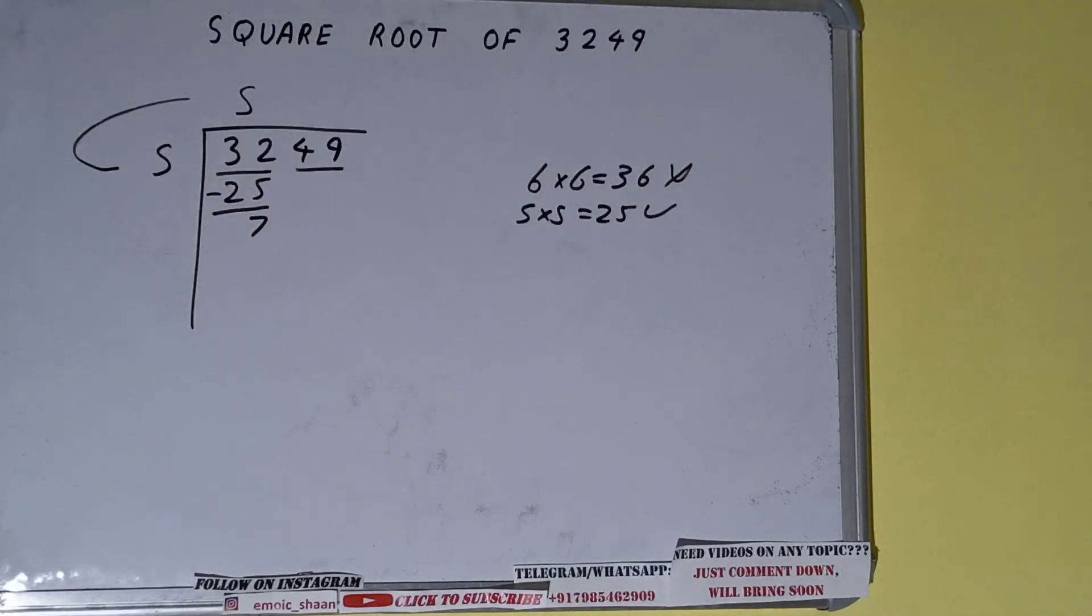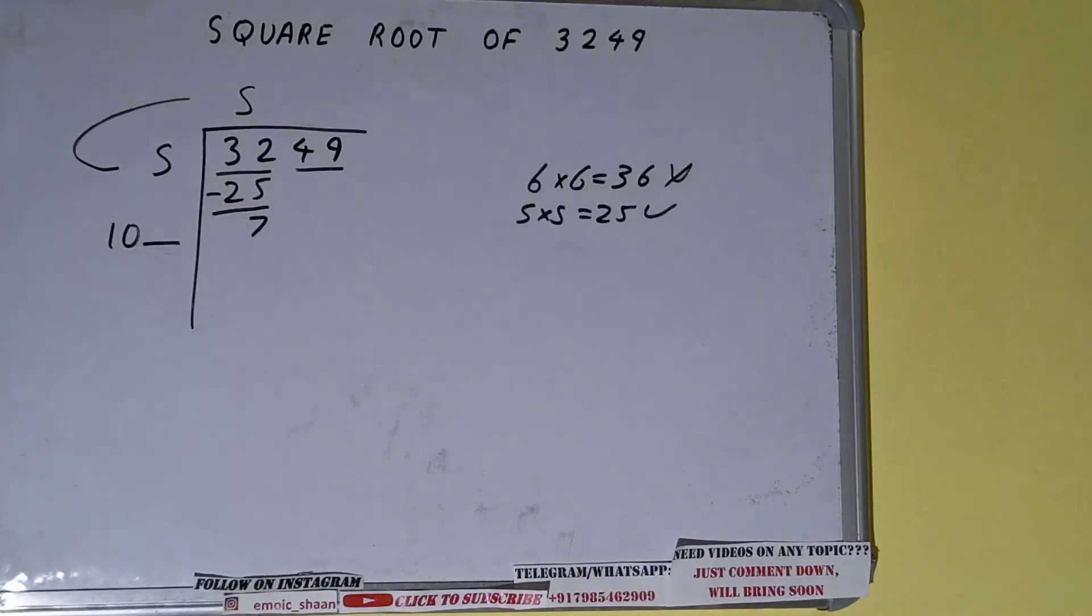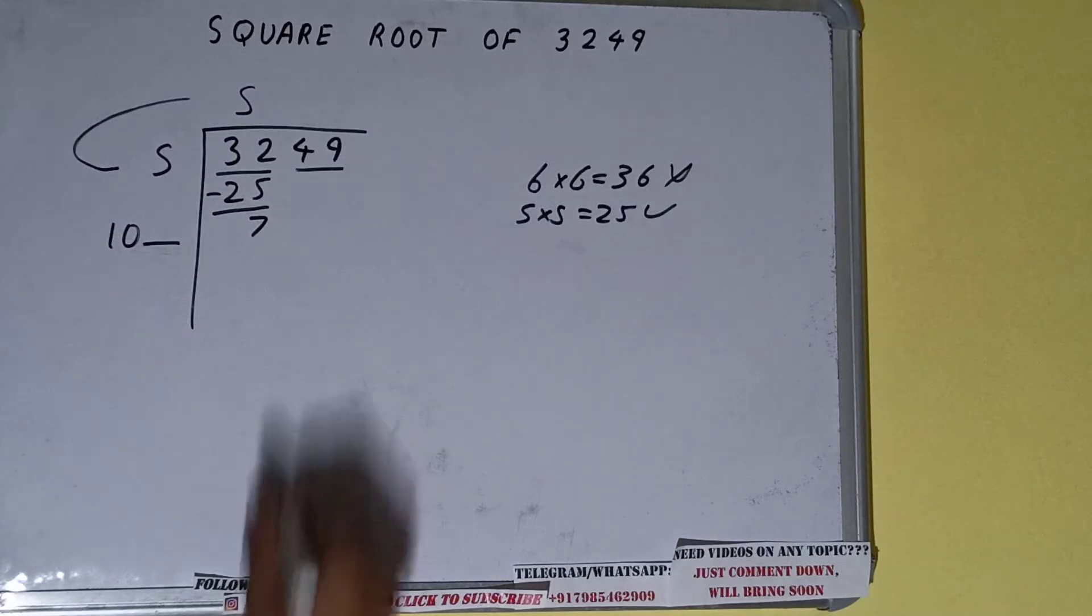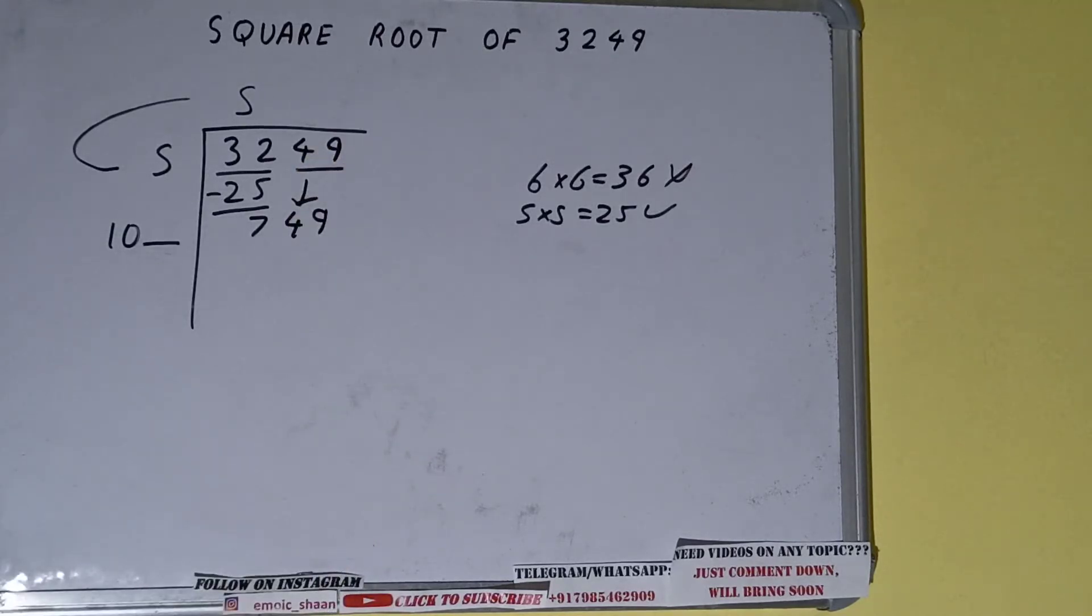So 5 plus 5 will be 10. Write it here and keep one digit extra, and this number we need to make it big. So bring the next pair down here. It will become 749.